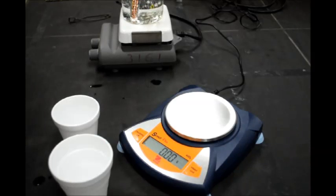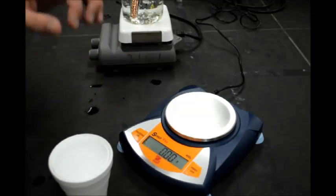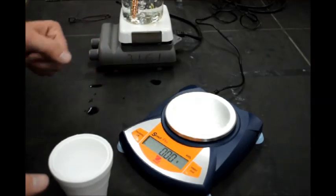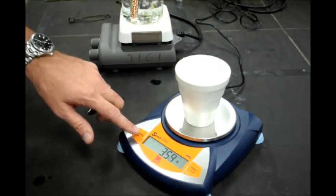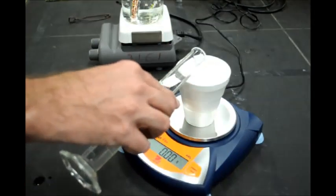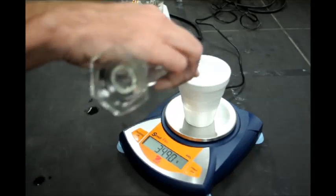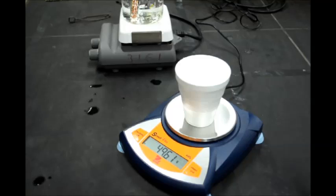Next we assemble the calorimeter by putting a small styrofoam cup inside a big one. That's it. We'll put that on the scale, zero it, and then we'll add 50 milliliters of water to it and get the mass. It's the mass of water that's important, not the volume.